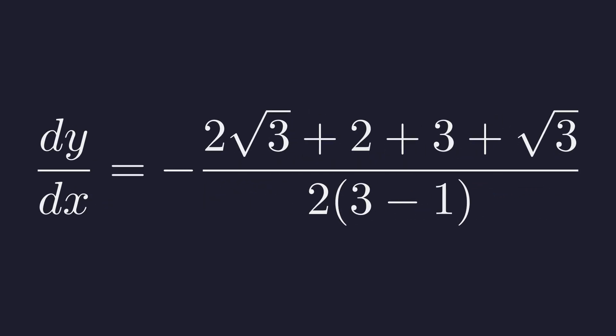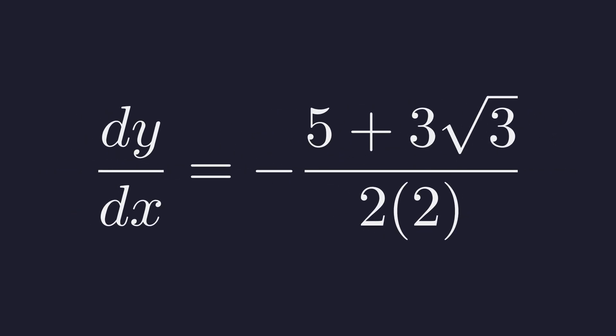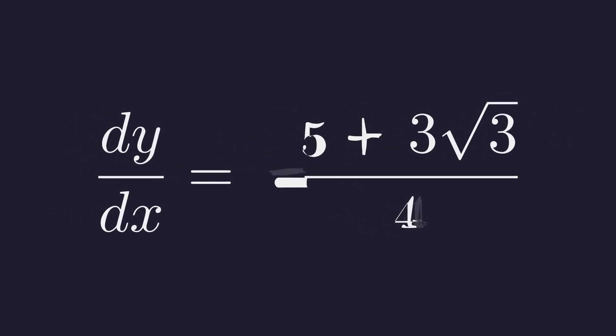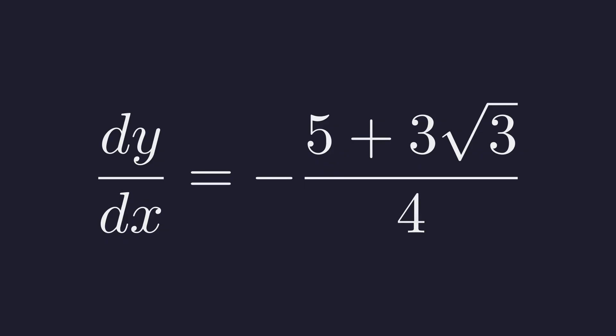We expand the numerator using FOIL and the denominator using the difference of squares formula. Combining like terms gives us this. And this is the final, fully simplified answer for the slope of the tangent line to our hypothetical curve at the point (1, 1).